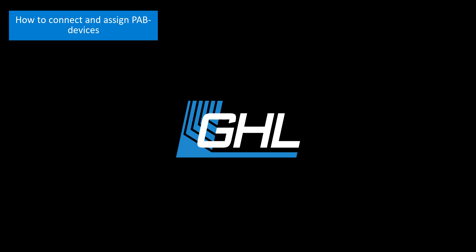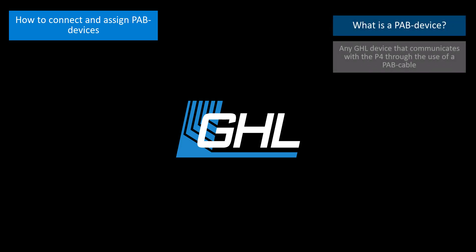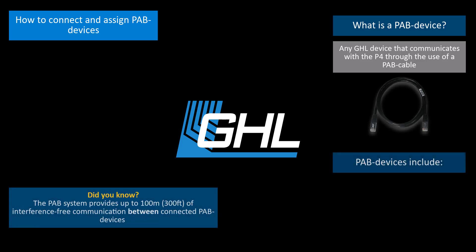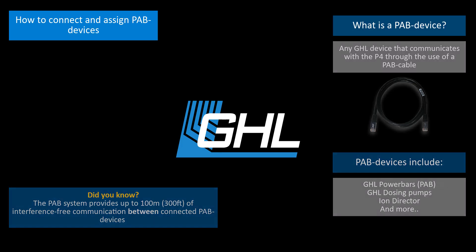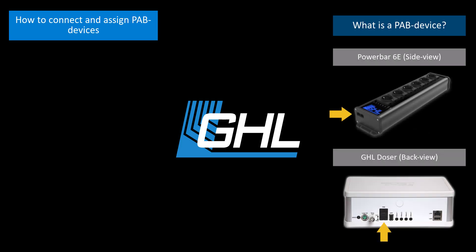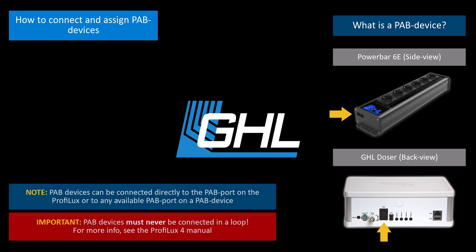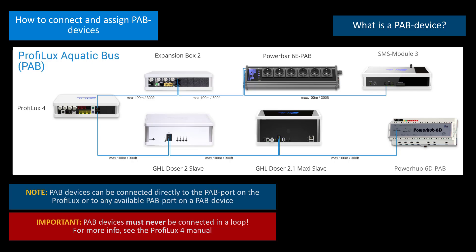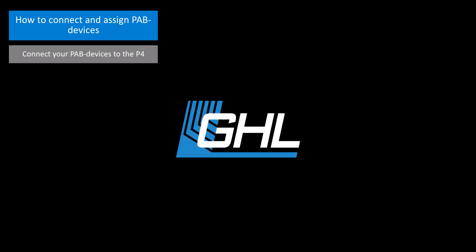The next step will be to connect and assign PAB devices. PAB devices are basically any GHL device that communicates with your Prophylax controller through the use of a PAB cable. PAB devices can be GHL power bars, dosing pumps, ion director, and more. If you look at the side or back of your PAB device, you'll notice there are two PAB ports, which are used for connecting to other PAB devices. Anytime you wish to add a device such as a doser, you can connect it to either an available PAB port on your P4 or to an available port of another PAB device. PAB devices can be daisy chained off of another device. At this time, connect your PAB devices to the P4.